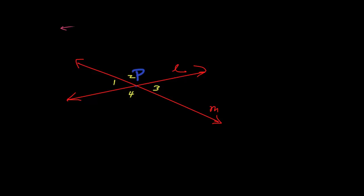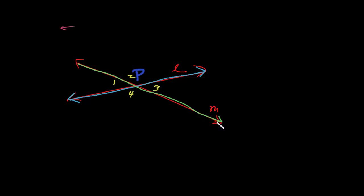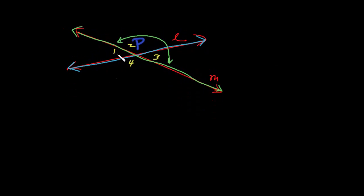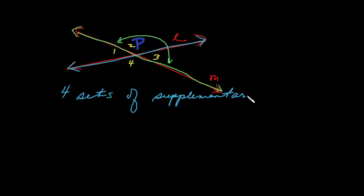Now one of the things we want to recognize in terms of linear pairs — we know that angle 1 and 2, if we highlight line L in blue, obviously angles 1 and 2 are supplementary, they're next to each other. But similarly, if we go to line M, we can take a look at angles 2 and 3 — they too also make up a linear pair. So after all is said and done, we can recognize that there will be four sets of linear pairs here, four sets of supplementary angles.